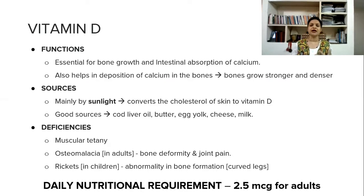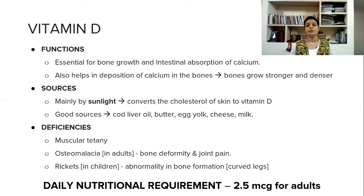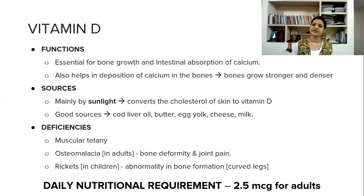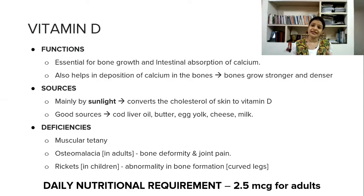Deficiency: many people come with vitamin D deficiency. Mainly symptoms like pain, fatigue, especially leg pain and muscular pain. If the deficiency is severe, some people come with muscle tetany where there are contractions of the muscles. Also, deficiency of vitamin D causes osteomalacia, mainly in adults — the bones become deformed, the quality of bones is reduced, there is softening of bones, pain in bones or joints, and recurrent fractures.